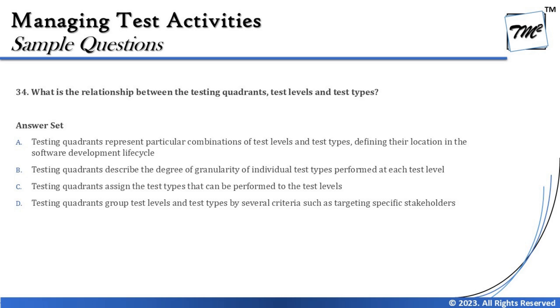Option C says testing quadrants assign the test types that can be performed to specific test levels. This looks like an interesting statement — most people would think it's right, but it is not correct. The reason is that any test type can be performed at any test level. From Chapter 2, Section 2.3, we clearly said that functional, non-functional, black box, and white box testing can be conducted at any test level. So option C does not hold.